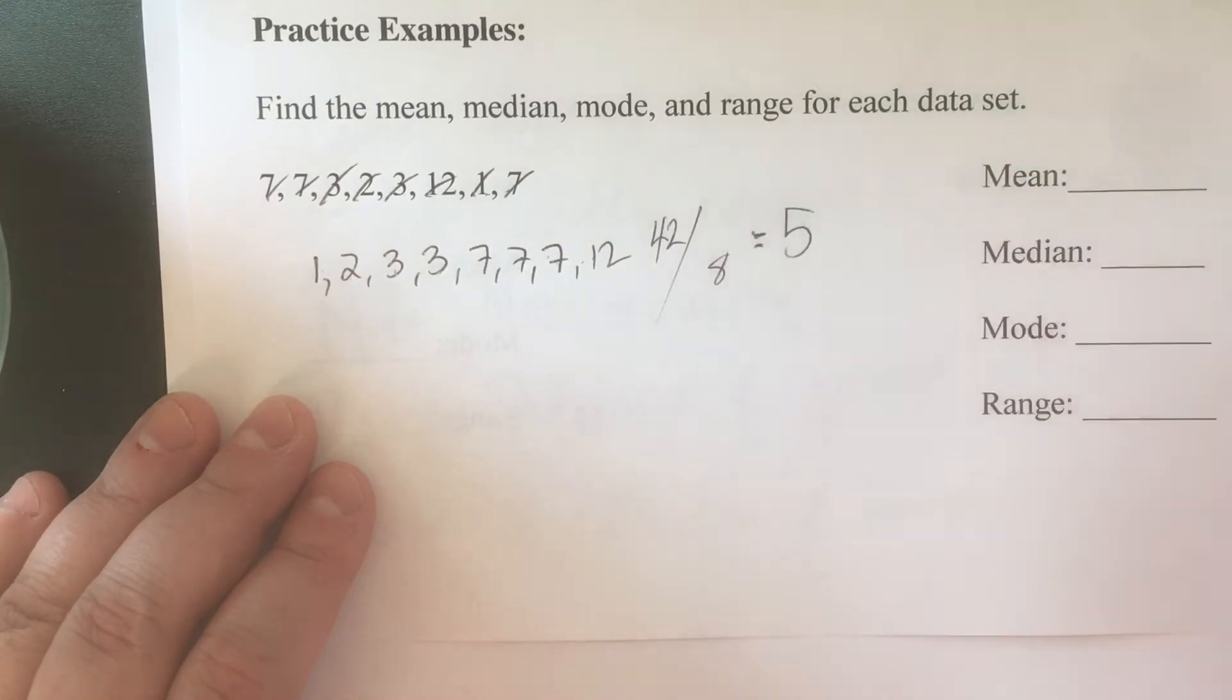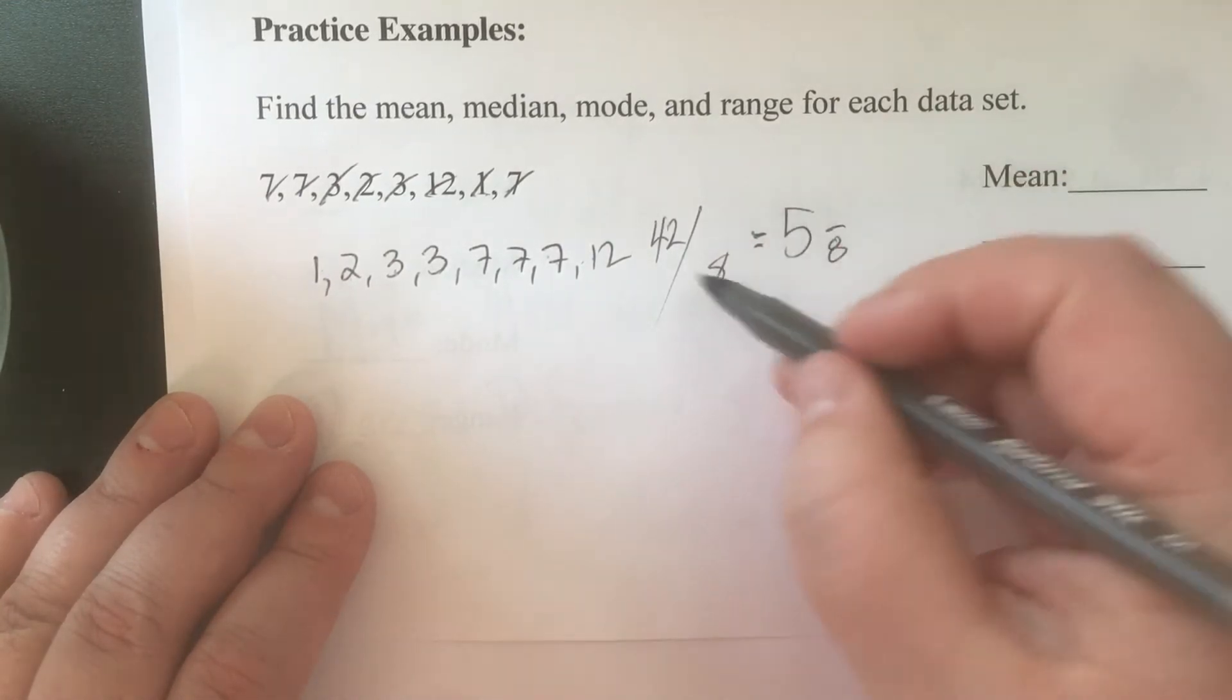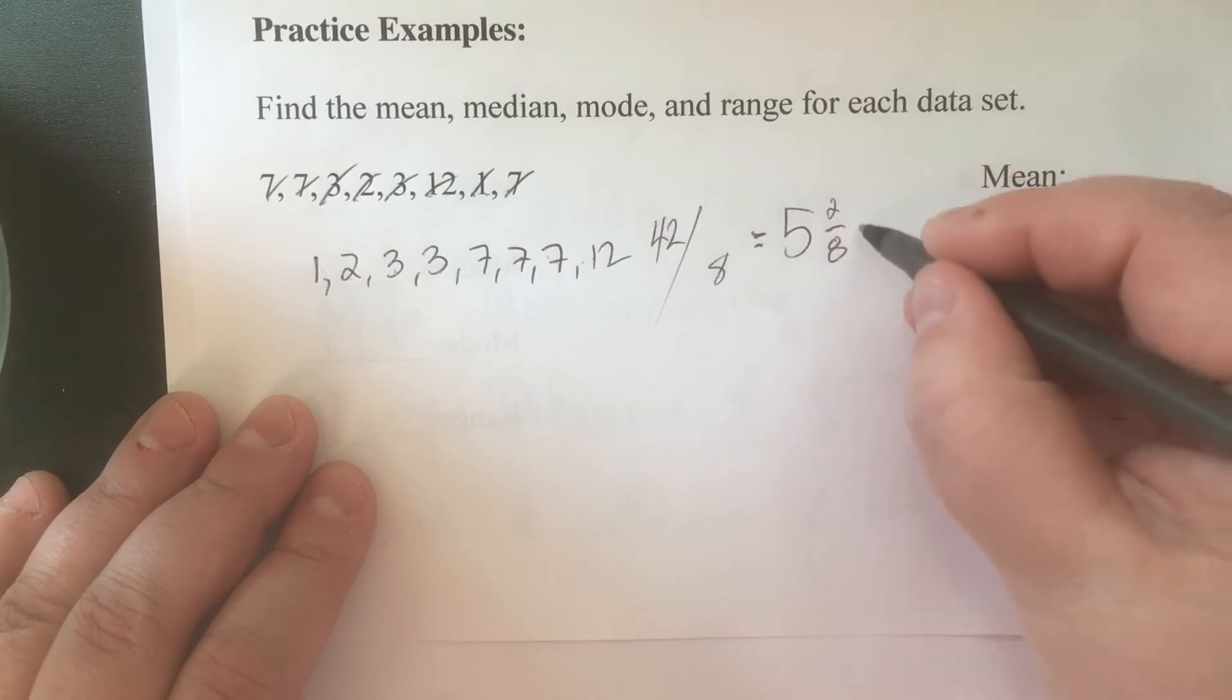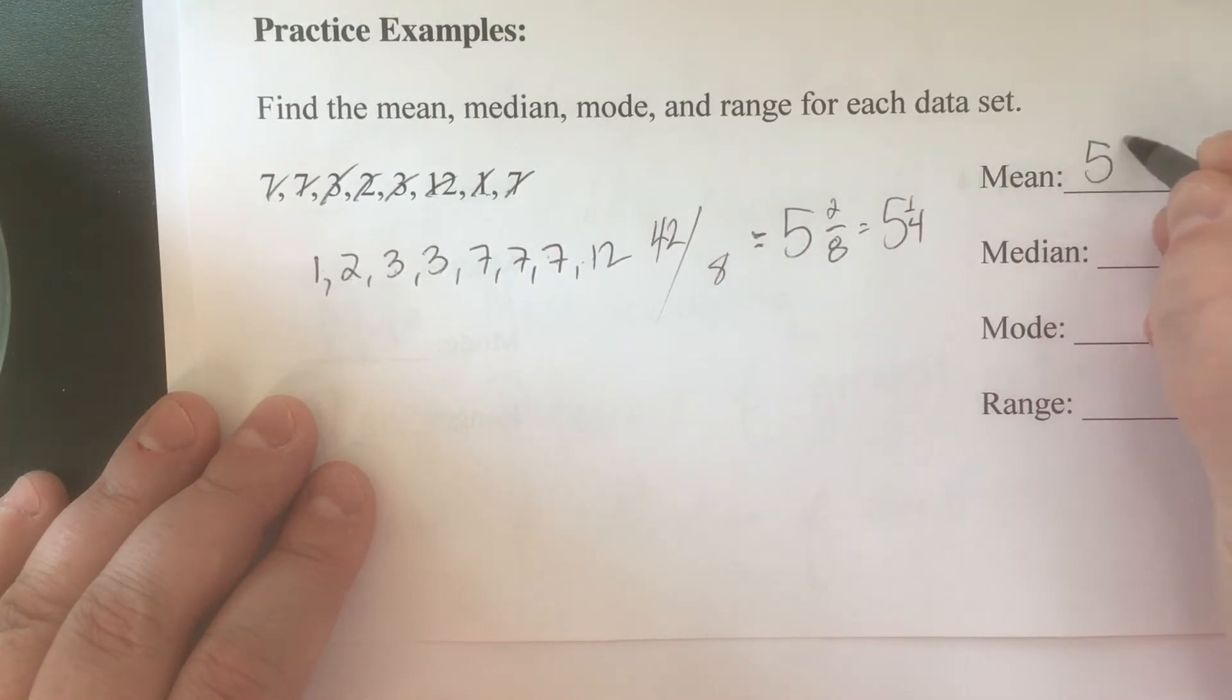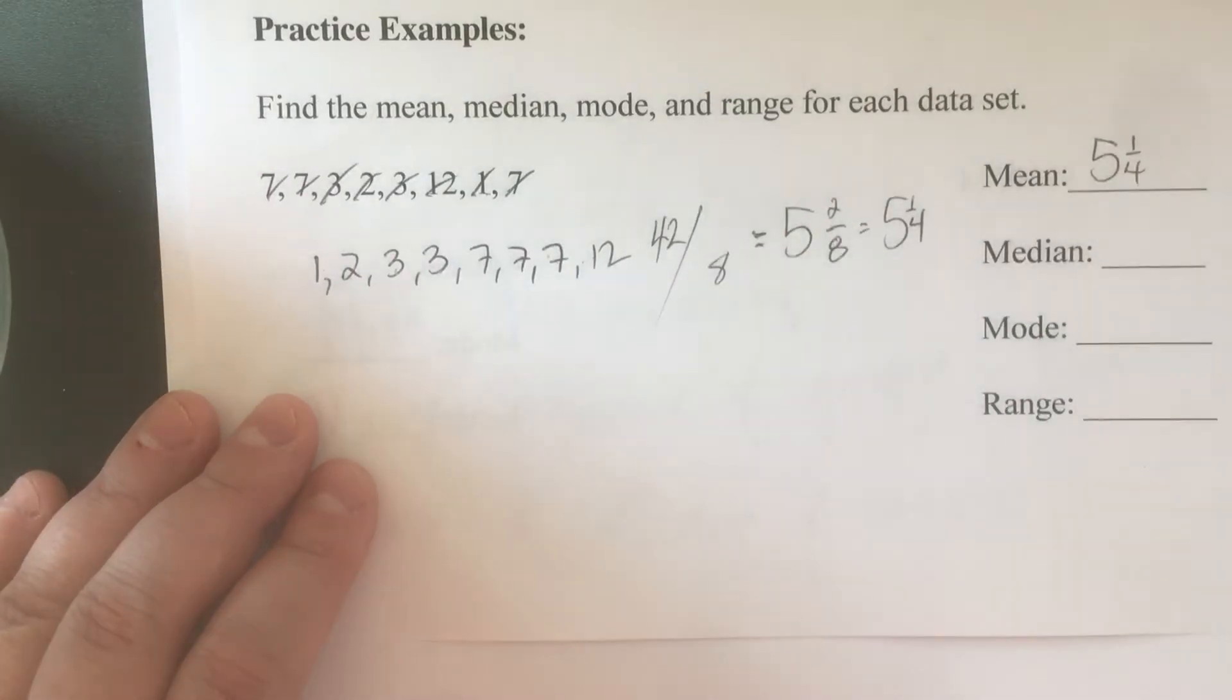So 42 over 8 - we can either divide that or you can recognize that 8 times 5 is 40, and then take 40 out, you're going to have 2 left over, which is 5 and 1/4. There's our average: 5 and 1/4 or 5.25.